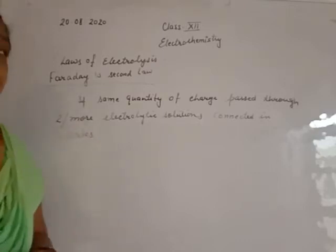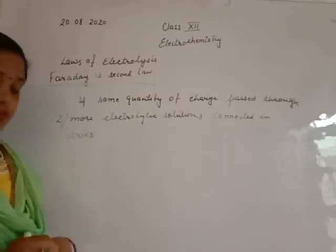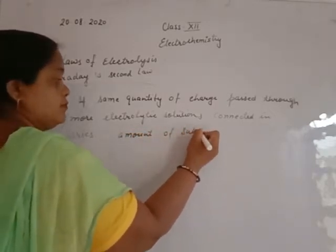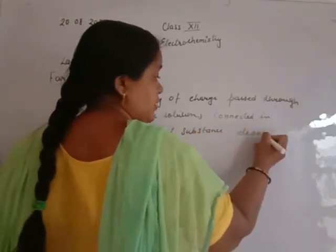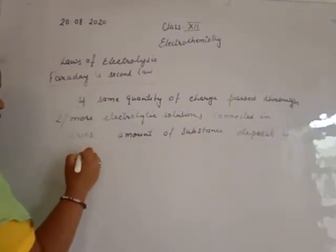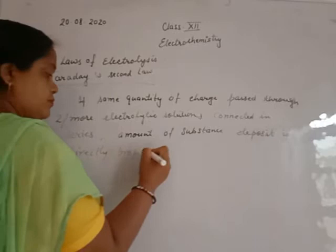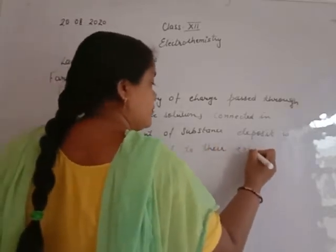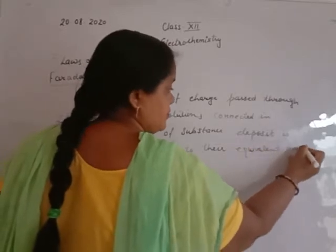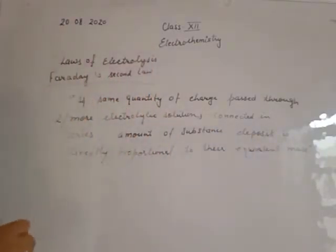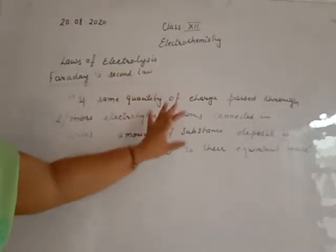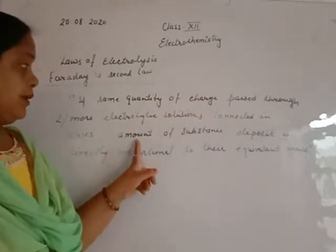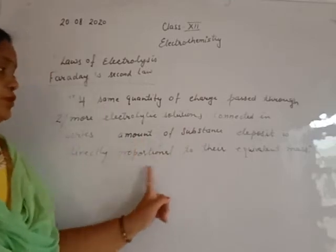If the same amount of substance is deposited or liberated, then the first law applies. But here, the same amount of substance is not deposited. The amount of substance deposited is directly proportional to their equivalent mass. This is Faraday's Second Law. If a number of electrolytic solutions are connected in series and the same amount of current is passed through them, then the amount of substance deposited is directly proportional to their equivalent mass.